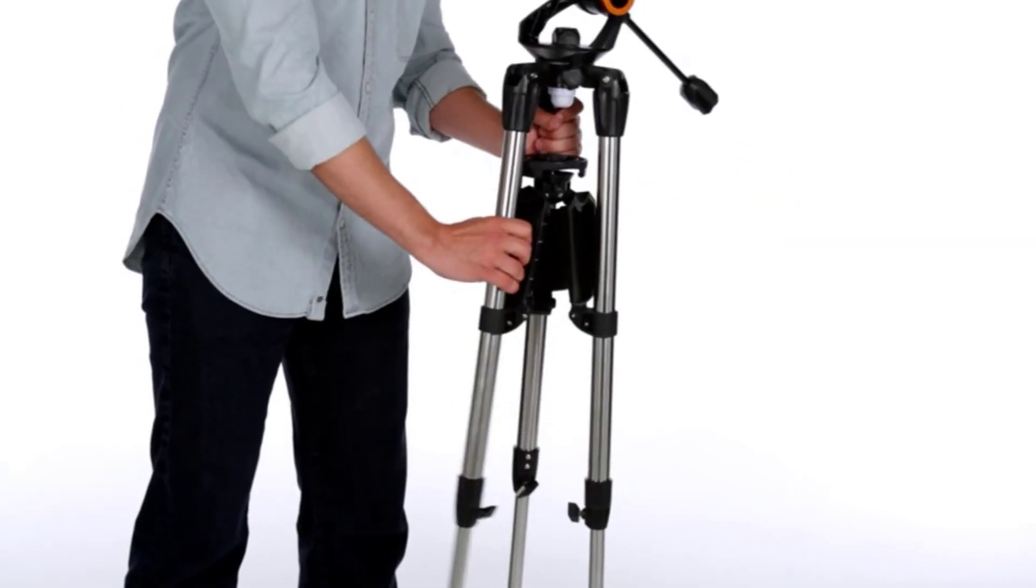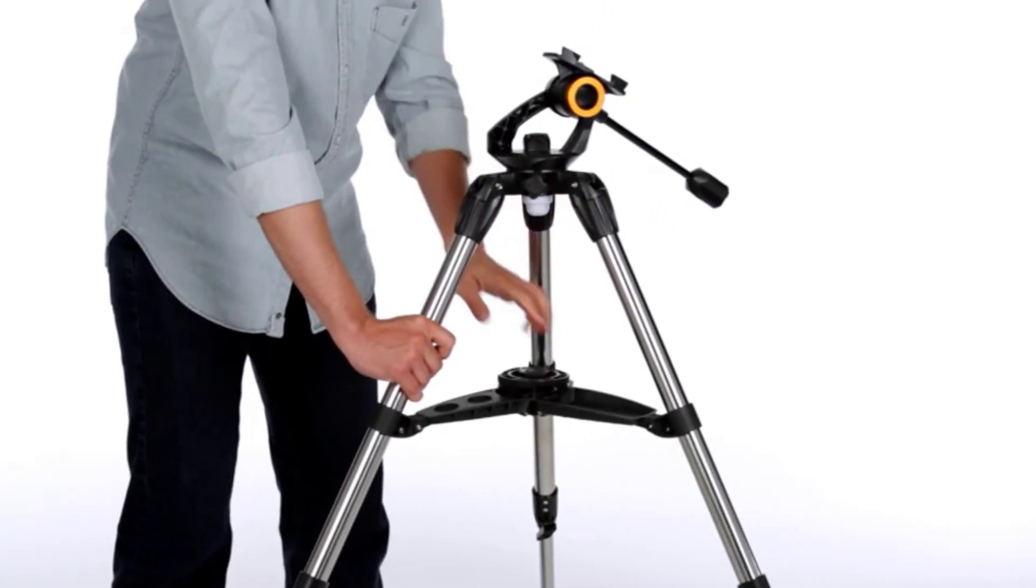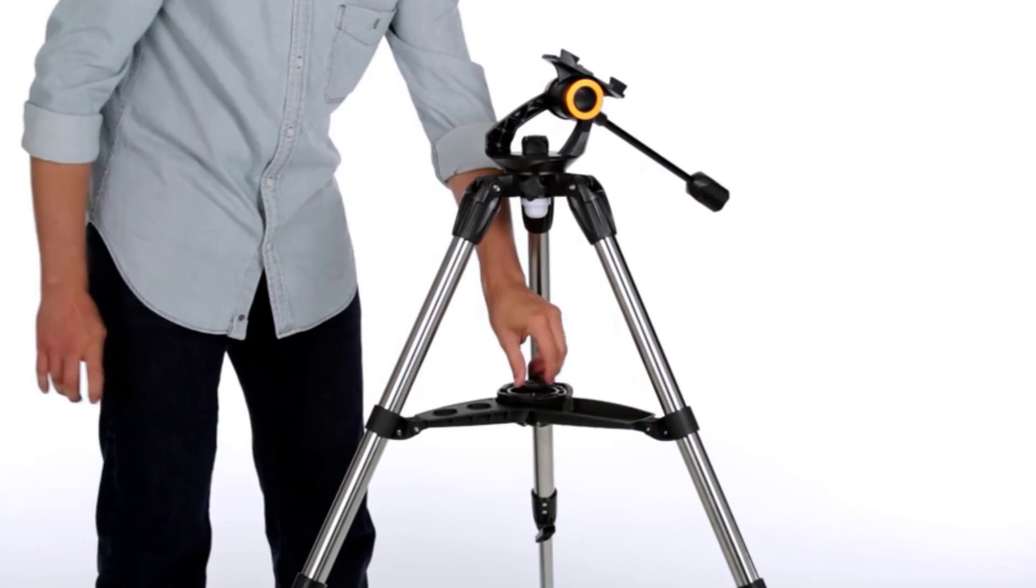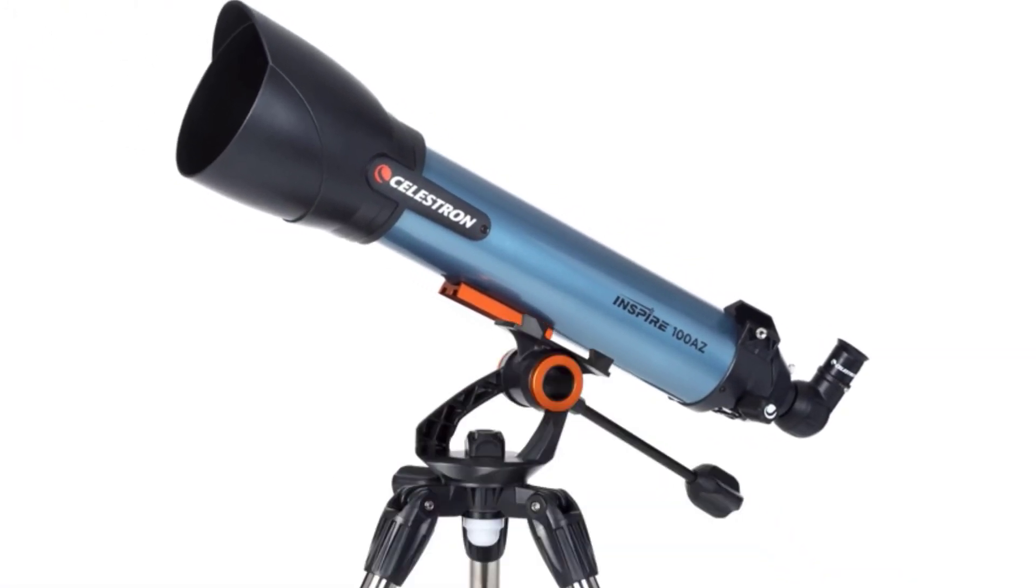Located on the mount is a built-in red LED flashlight that can be used to light up the accessory tray on the sturdy tripod or removed to use separately as needed.